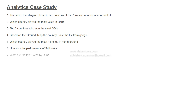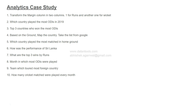Question seven is: what are the top three wins by runs? Question eight is: in which month were the most ODIs played? — a straightforward time series question. Question nine is: which team toured the most foreign countries — meaning which team played the most matches on foreign surfaces. Question ten is: how many cricket matches were played every month? — trending information. Question eleven is: on which ground were the most games played?